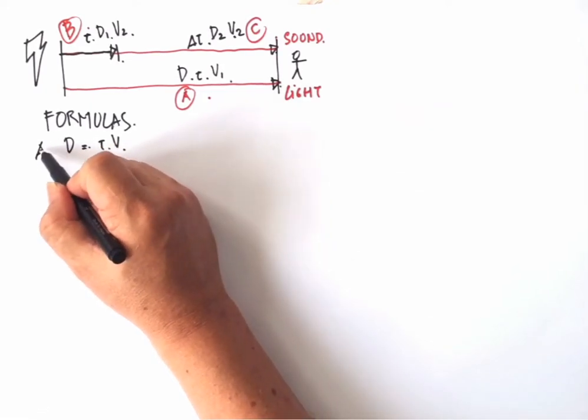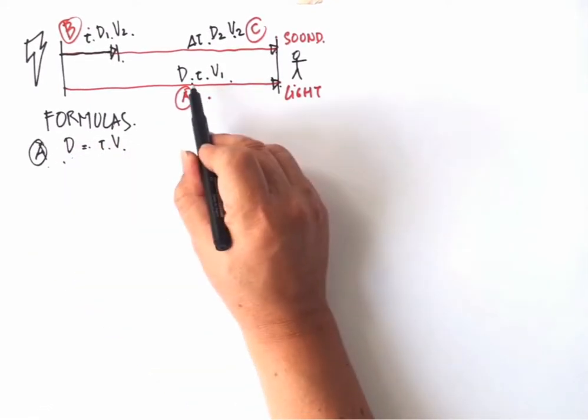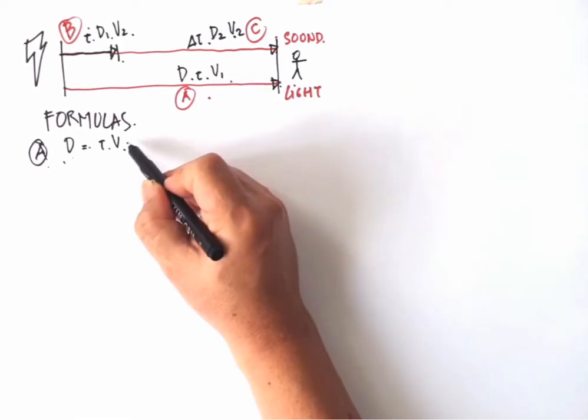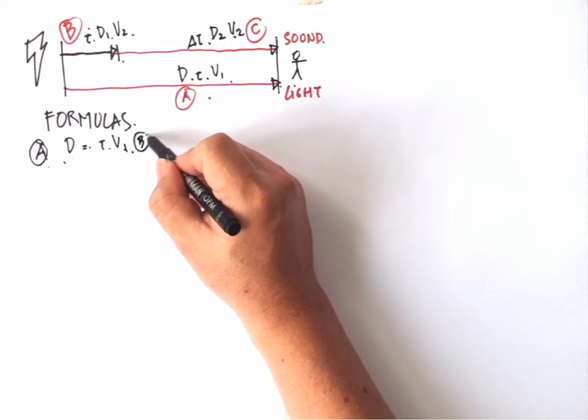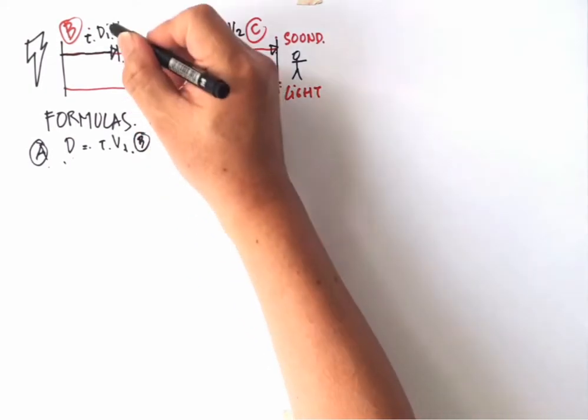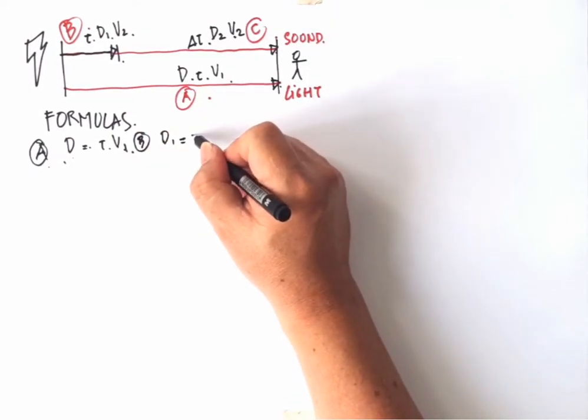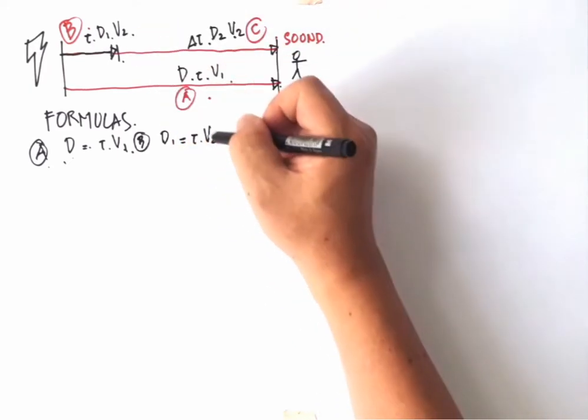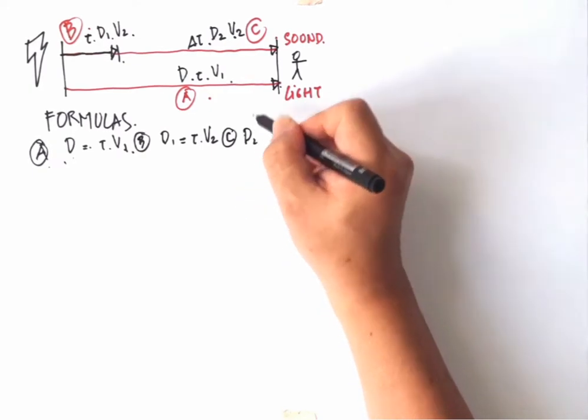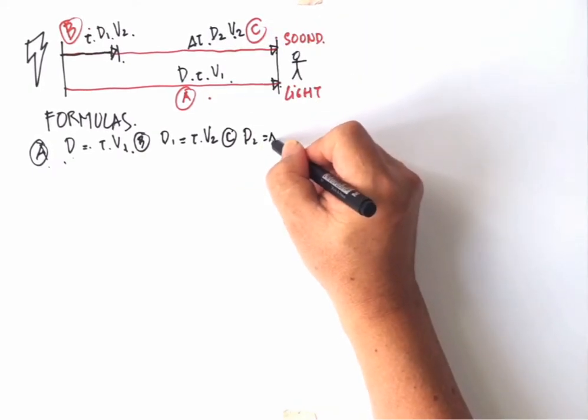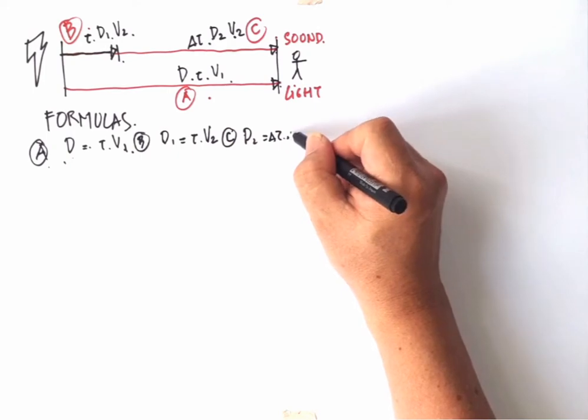Being more specific about the formulas: In this A section it will be D, T and V1. In this B section it will be D1 equal to T multiplied by V2. In this C section it will be D2 equal to delta T multiplied by V2.